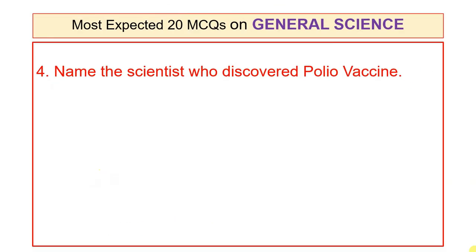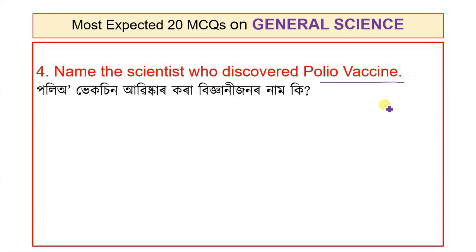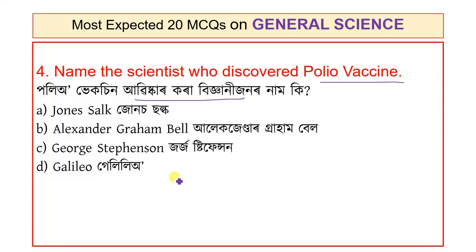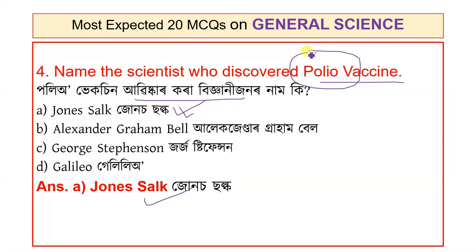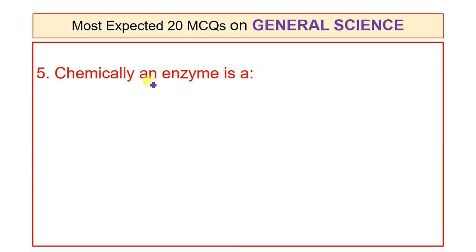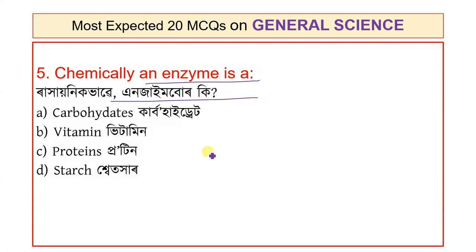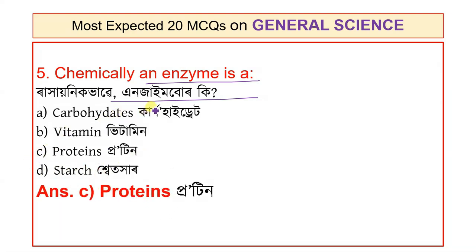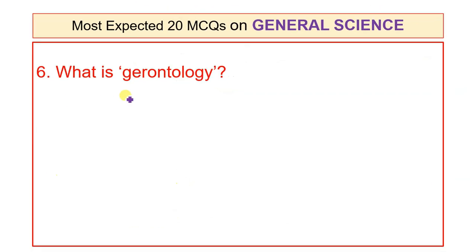Question 4: Name the scientist who discovered the polio vaccine. Question 5: Chemically, an enzyme is — options: Vitamin, Protein, or Carbohydrate. The answer is Protein — option C. Enzymes are chemically proteins.